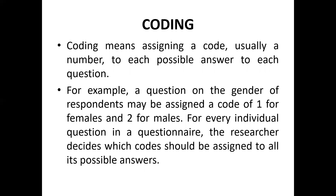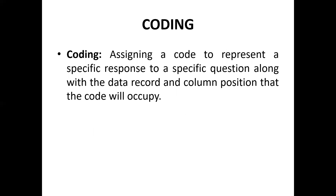The second step in data processing is coding. Coding means assigning a code — usually a number — to each possible answer to each question. For example, a question on the gender of a respondent may be assigned a code of one for females and two for males. For every individual question in a questionnaire, the researcher decides which codes should be assigned to all its possible answers — for instance, a Likert scale where 'strongly agree' is assigned five or one depending on your criteria.